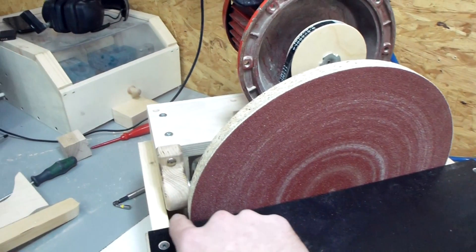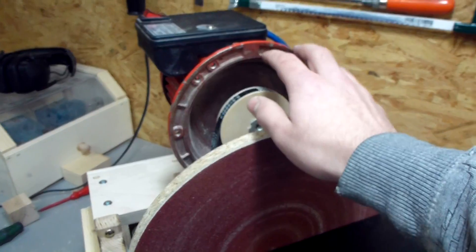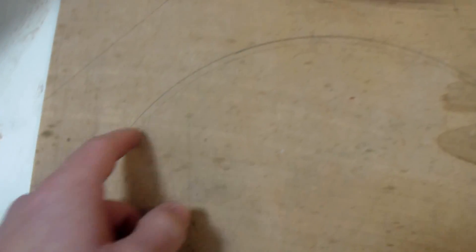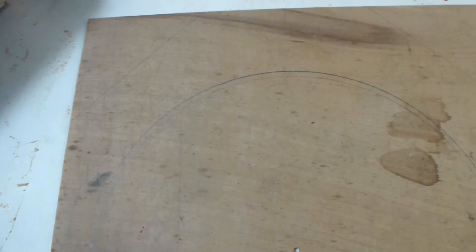So the next thing this sander needs is a cover that covers up the disc around here and the belt. So I drew up the arc for the disc on a piece of plywood and next I'm going to cut it out on a bandsaw.